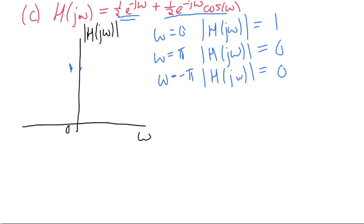So we get something that looks like this. This is negative π, and this is π.